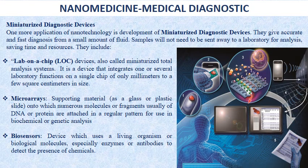Miniaturized diagnostic devices provide accurate and fast diagnosis from small fluid samples, sometimes without sending them to a lab. There are three types: first, lab-on-a-chip (LOC) devices, which integrate one or several lab functions on a single chip of only millimeters to a few square centimeters in size; second, microarrays, made of supporting materials like glass or plastic with numerous DNA or protein molecules attached in regular patterns for biochemical or genetic analysis; and third, biosensors, which use a living organism or biological molecule — especially enzymes or antibodies — to detect the presence of chemicals.